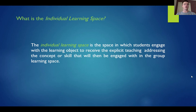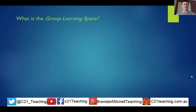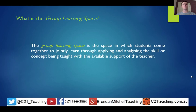How this works will depend on your specific context and subject area, and is a decision you will make using your professional judgment as a teacher. When students have completed the learning object in the individual learning space, they then come to the group learning space. The group learning space is where the activity happens — the active learning, the seeing, the applying, the analyzing — where you are there to support students as they engage with higher-level thinking skills.